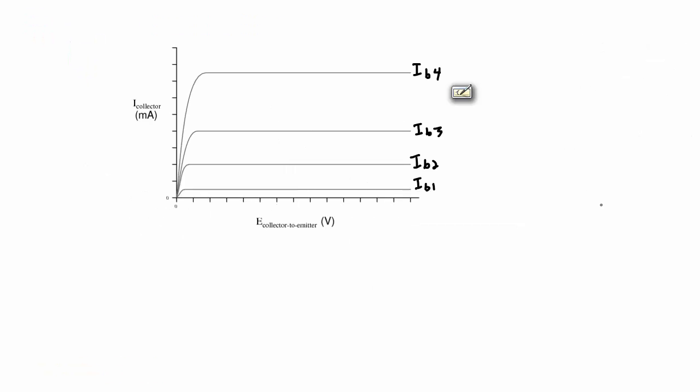What we're looking at here is the set of characteristic curves for a transistor. This is relating the collector emitter voltage to the collector current for a number of different base currents.